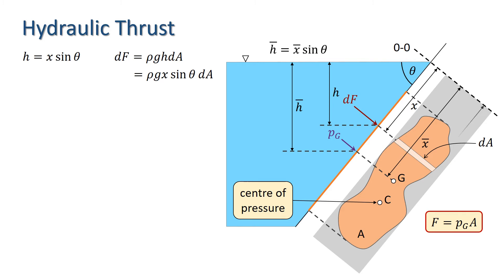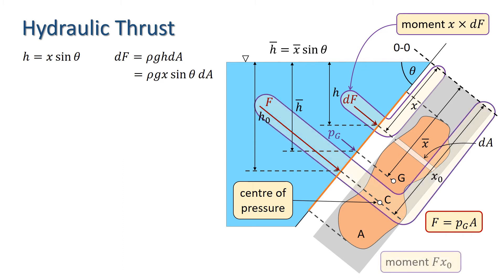Let X0 be the distance from OO to the centre of pressure of A, and H0 be the pressure head at that point. The moment of the elementary force dF about OO is X times dF, and integrating this over A should produce a moment equal to the thrust times the distance of the line of action of F from OO, which is X0. Thus we have F X0 equals the integral over A of X dF.